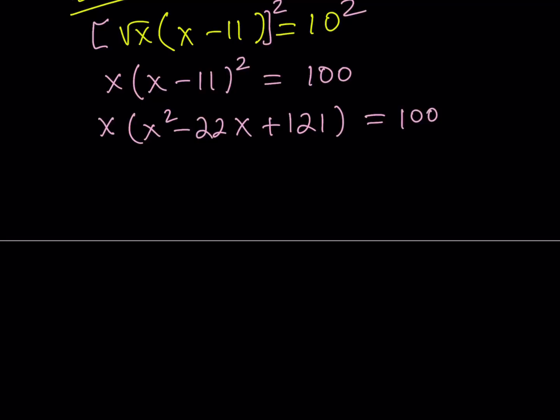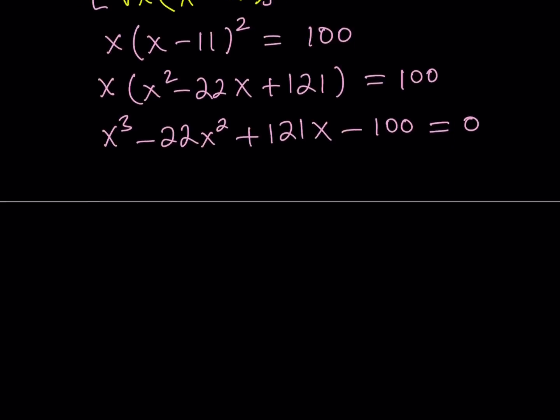Now let's go ahead and expand it. It's going to become x squared minus 22x plus 121. And we've done a cubic before, and this is just another cubic. Let's distribute. I get x cubed minus 22x squared plus 121x equals 100. And I can bring that over to the left and it becomes a cubic. How do you solve this cubic? Well, it's not symmetrical. It's not very easy to solve. You can do guess and check.